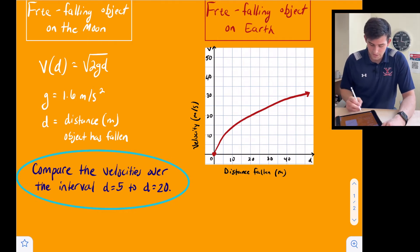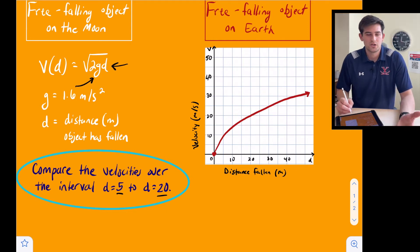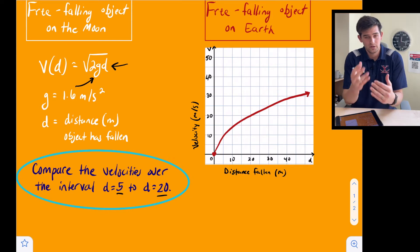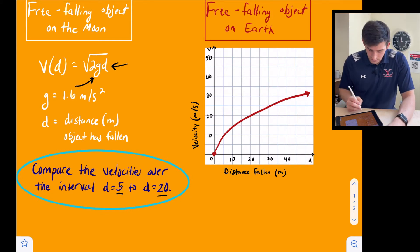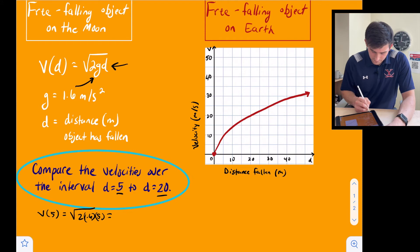For our equation it's pretty simple. We're going to plug in 5 and 20 for d, plug in 1.6 for g, solve it, and get two coordinates. Then we'll find the slope between those two coordinates. So v of 5 equals square root of 2 times 1.6 times 5, and v of 20 equals the square root of 2 times 1.6 times 20.